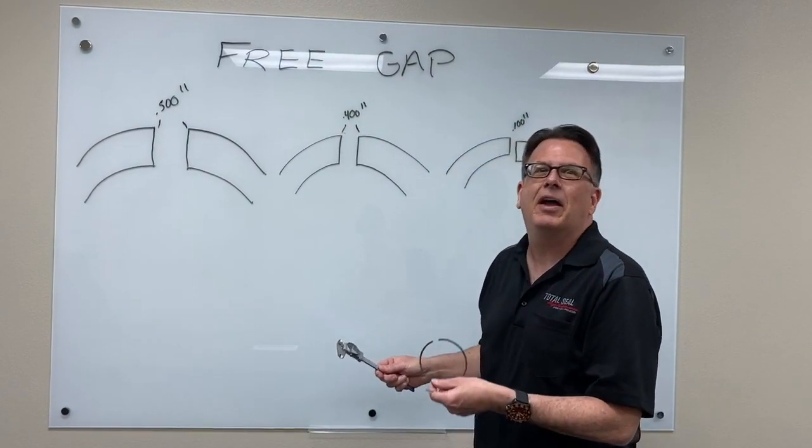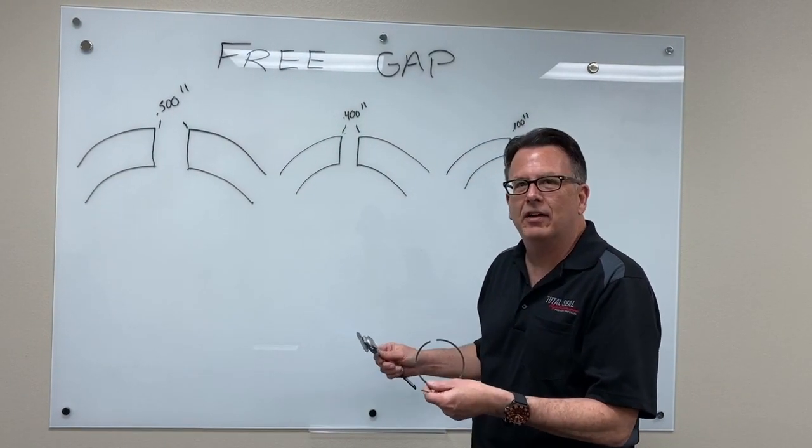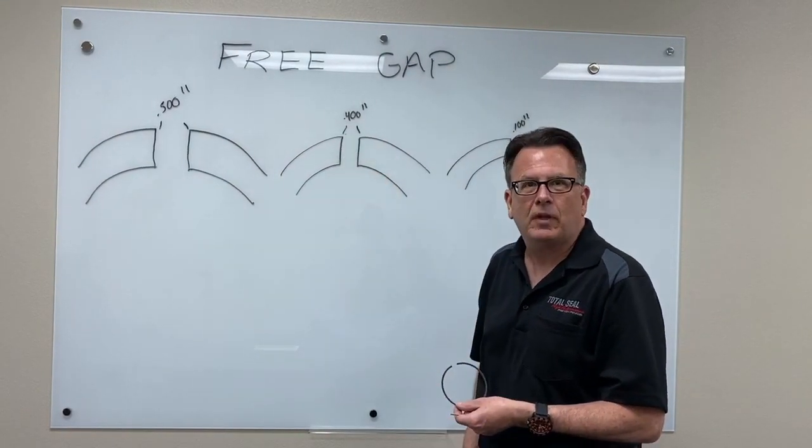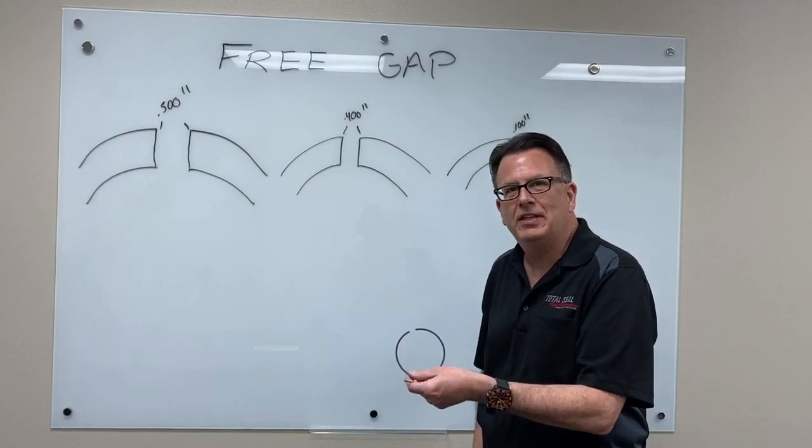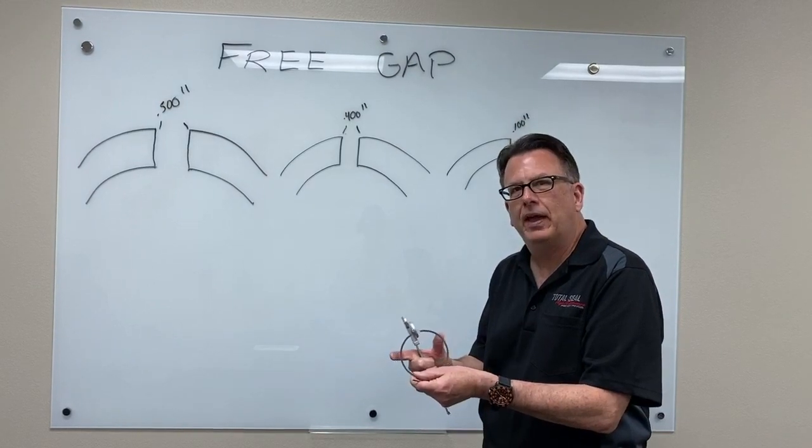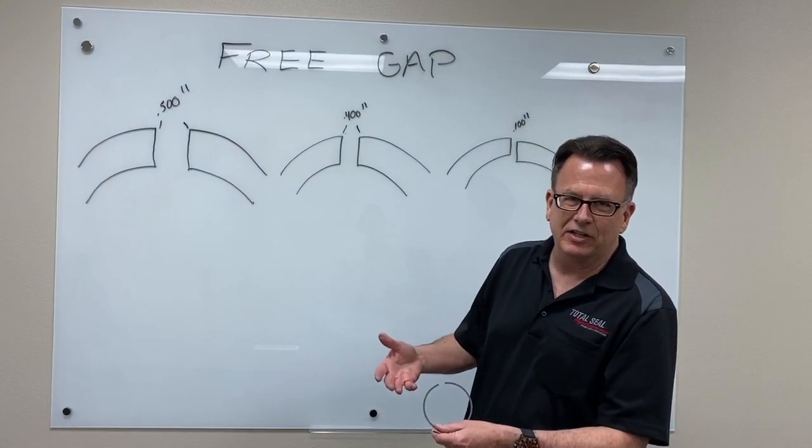It's typical to see about 100 thousandths, maybe 80 thousandths of reduction in that gap. Once the engine's been run, the ring's been heat cycled, it's going to lose a little bit of that tension. Heat puts the tension in, heat takes the tension out.